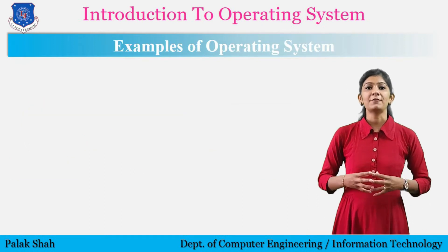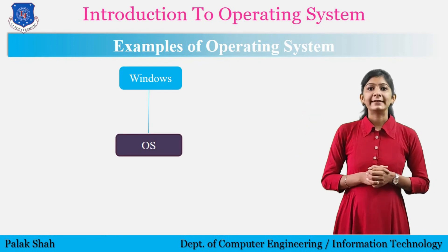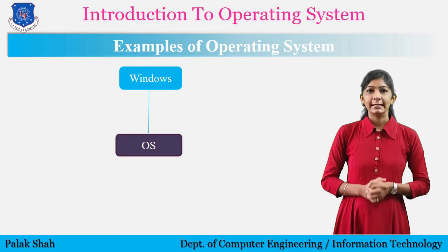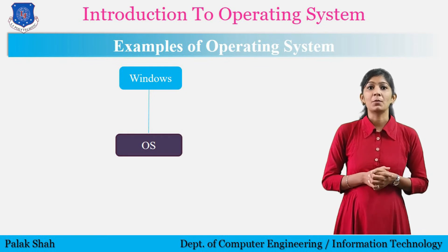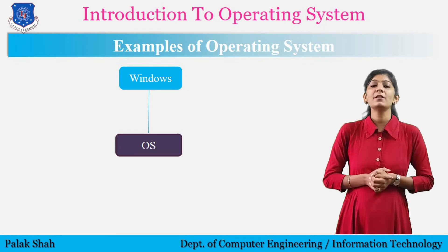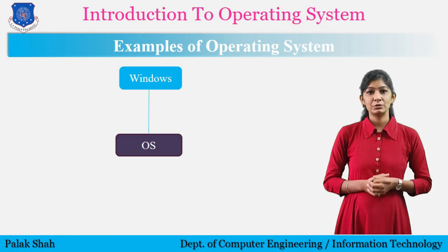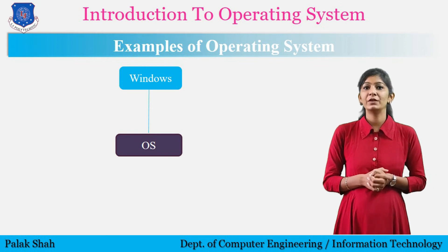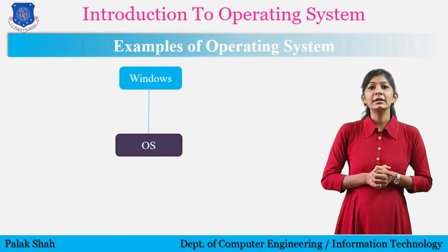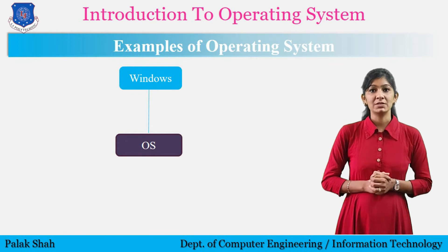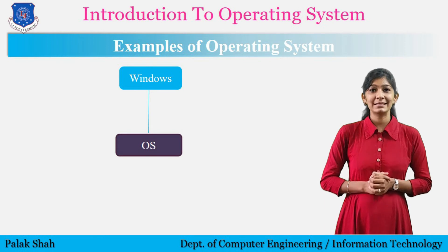Now we will see the examples of operating systems. Windows: Microsoft created the Windows operating system in the mid-1980s. There have been many different versions of Windows, but the most recent versions include Windows 10, released in 2015; Windows 8, 2012; Windows 7, 2009; and Windows Vista, 2007. Windows comes pre-loaded on most new personal computers, which helps make it the most popular operating system in the world.